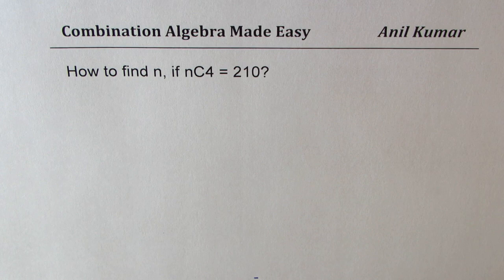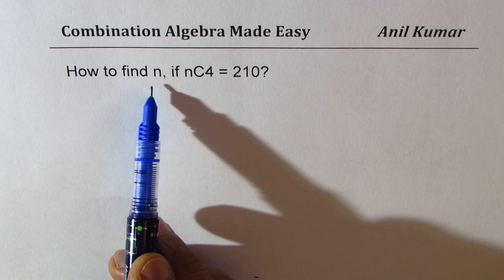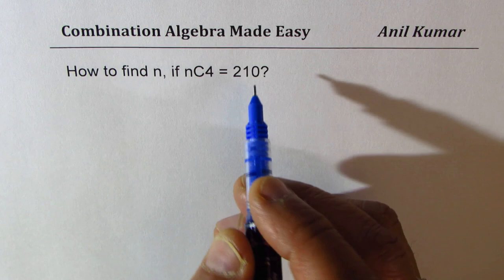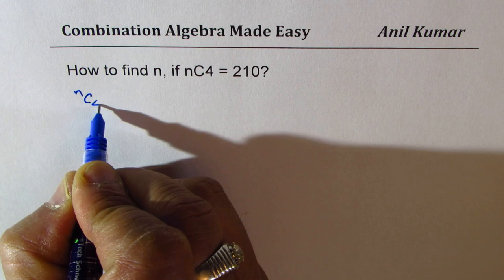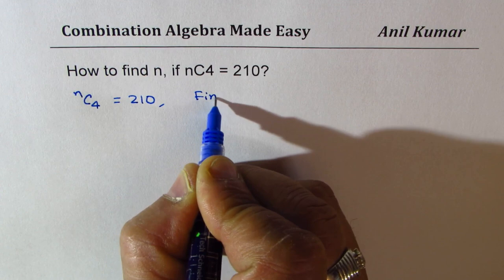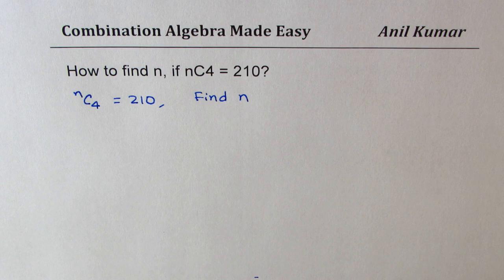Now he wants to know how to find n if nC4 equals to 210. So what we are given here is that nC4 is equal to 210. We need to find n and that too we should be in a position to find without calculator.